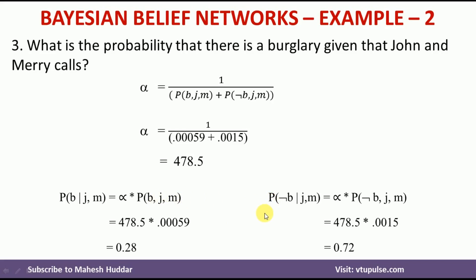Comparing the two probabilities, P(¬B | J, M) = 0.72 is greater than P(B | J, M) = 0.28. Hence, you can say that there is no burglar in the home. In this video, I have explained how to calculate the probability of an event given some evidences — in this case, the event is whether there is a burglar in the home or not, and the evidences are that John has called as well as Mary has called.